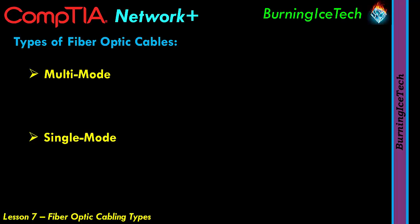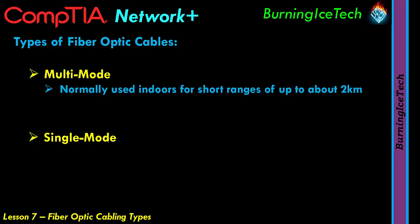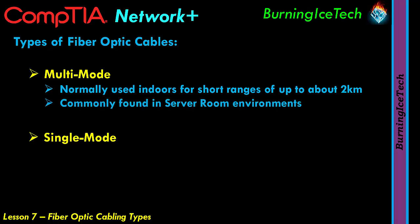As for multi-mode fiber, we normally use this for connecting things indoors. This one can go up to two kilometers, and is most commonly found in places like a server room, though it's obviously not limited to server rooms. Fiber optic cable is generally a lot faster than ethernet cable, which is why it is the preferred cable to use in server rooms for linking various equipment together — things like your switches. All the equipment will be able to communicate at much faster speeds than if you were using ethernet cables.